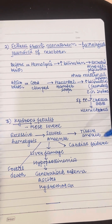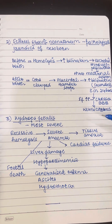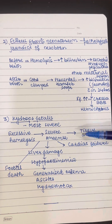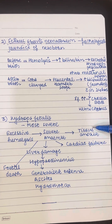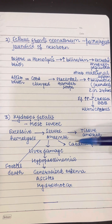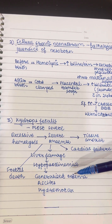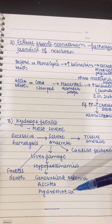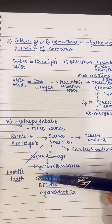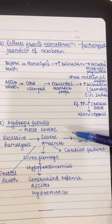With further or more severe hemolysis there is severe anemia which causes tissue anoxia and even cardiac failure. It can cause liver damage leading to hypoproteinemia with edema, ascites, and hydrothorax, and can even lead to fetal death. That condition is called Hydrops Fetalis.